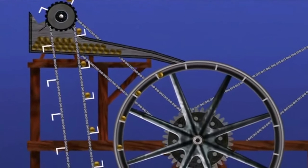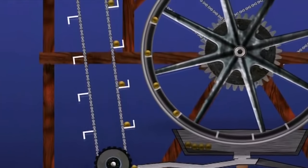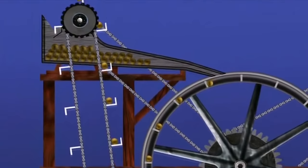The weight of the falling balls turns the main wheel which in turn raises the elevator that brings the balls back up to the top for reuse.